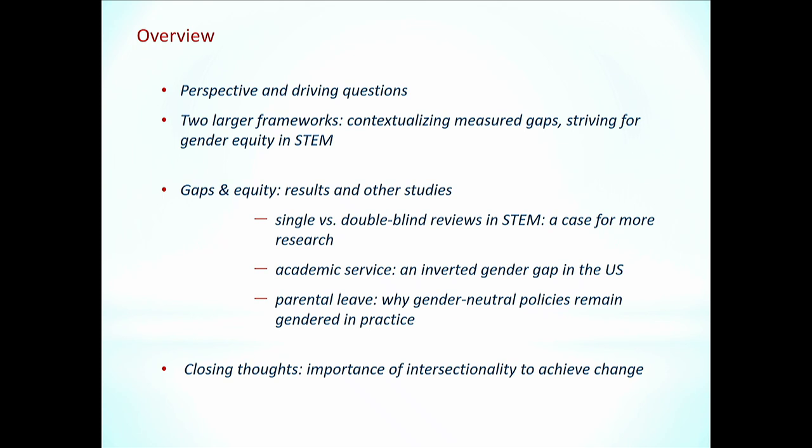I will then go into three examples of gaps and equity. The first one is about results of a study that stemmed from the data of this project. The last two are other studies, and they concern single versus double-blind reviews — that's the study I led with an undergraduate tied to data from this project — then academic service, which is an inverted gender gap in the United States, and the case of parental leave and why gender-neutral policies remain gendered in practice. I'll close with some conclusions, bringing this back to the initial questions and my perspective.